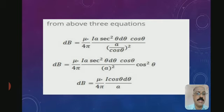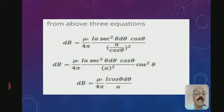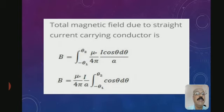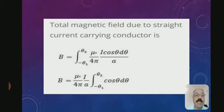Substituting equations (1), (2), and (3), we get: dB = (μ₀ / 4π) · I·A·sec²(θ)·dθ·cos(θ) / (A/cos(θ))². Rearranging: dB = (μ₀ / 4π) · I·cos(θ)·dθ / A. To find the total magnetic field due to the straight current-carrying conductor, we integrate this expression from -θ₁ to θ₂: B = (μ₀ / 4π) · (I/A) · ∫cos(θ)dθ from θ₁ to θ₂.